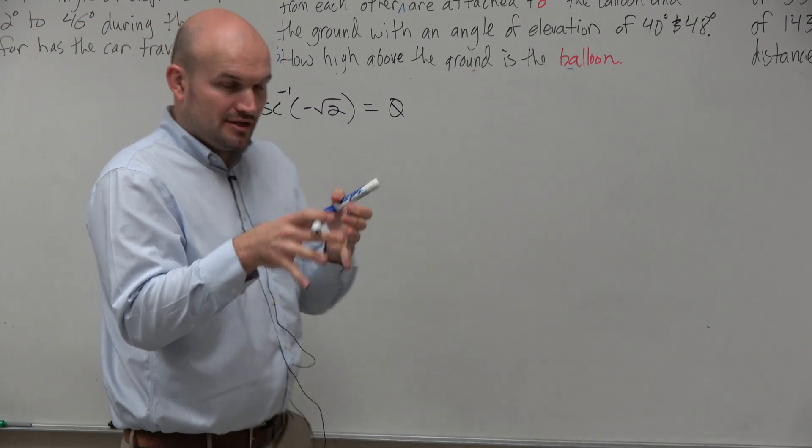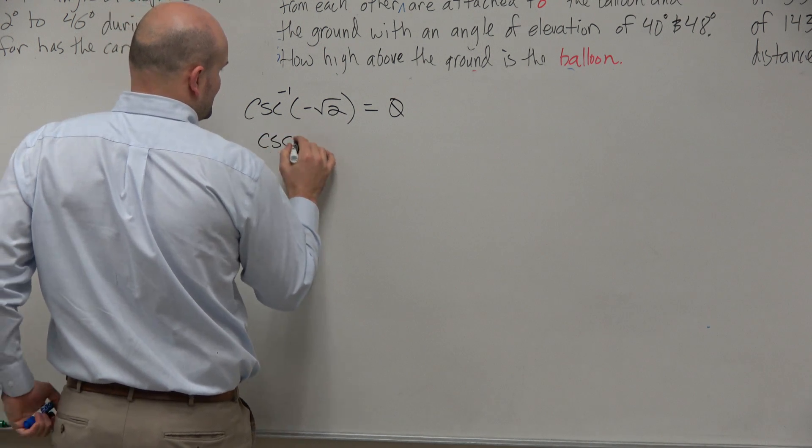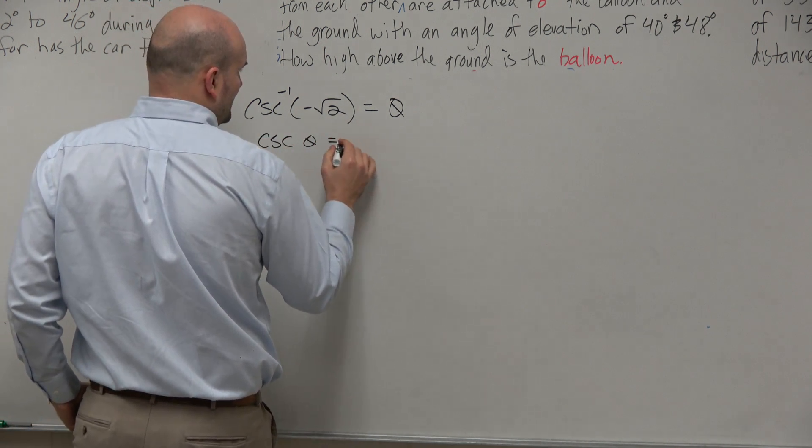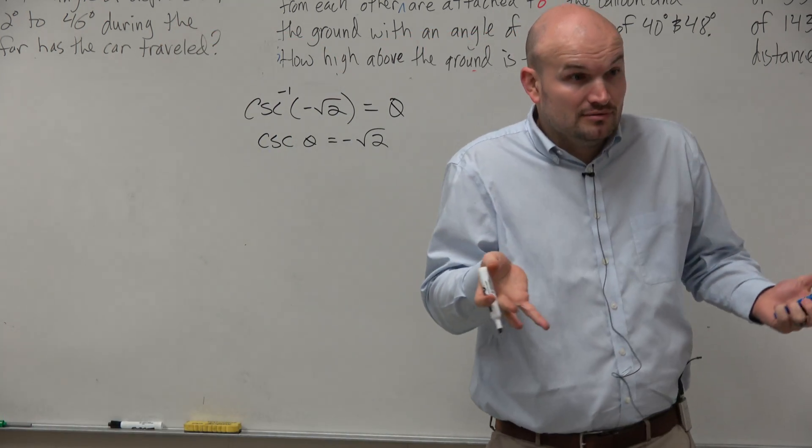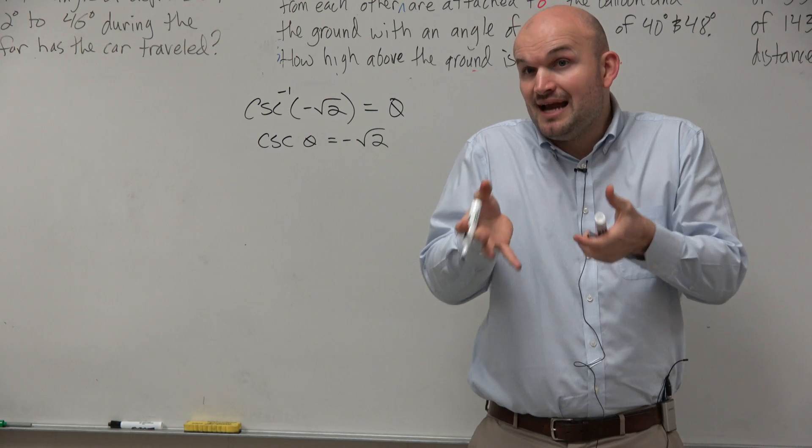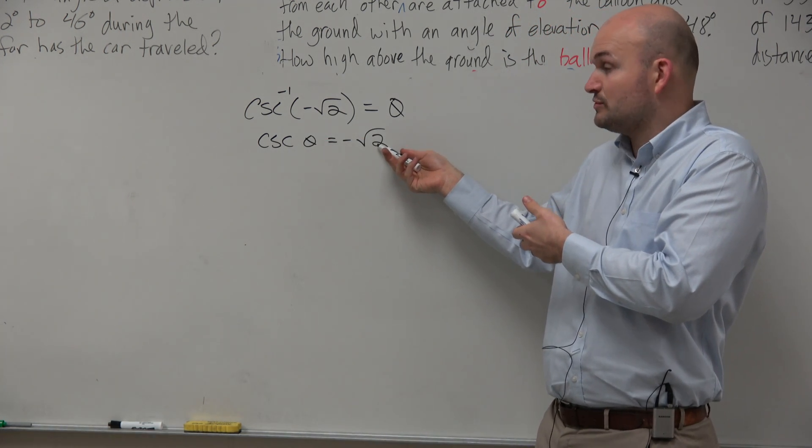So another way to write this, where does this cosecant inverse come from? It's really asking us, cosecant of some angle equals negative √2. So the cosecant of some angle, just like we did there, there I gave you the angle. We're saying now, I'm saying the cosecant of some angle equals negative √2.